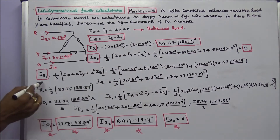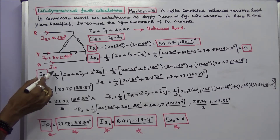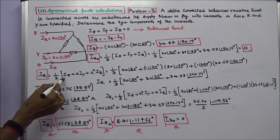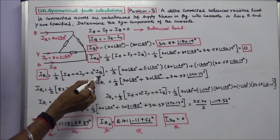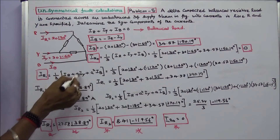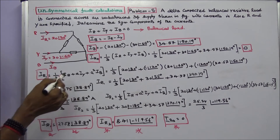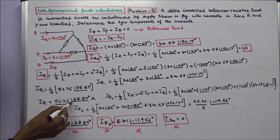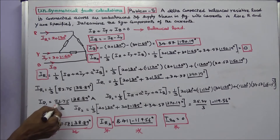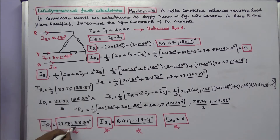Next we calculate IR1, the positive sequence current in the R phase. IR1 is equal to 1/3 into IR plus A·IY plus A²·IB. Substituting all the values, IR1 is equal to 82.75 angle 38.89 degrees divided by 3, which gives 27.58 angle 38.89 degrees.